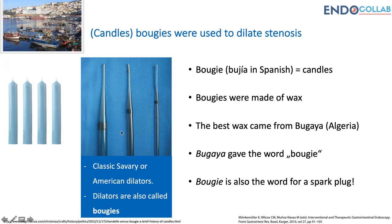Here we have an example of classic Savary or American bougies, or dilators. And this is the beautiful city of Bougaia.